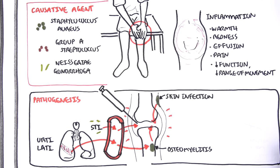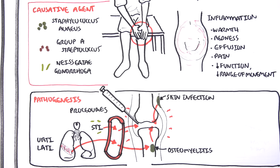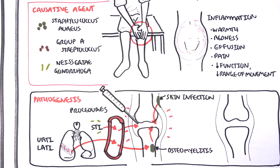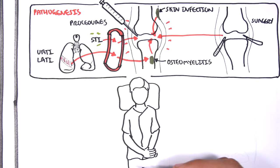Procedures such as injections to the joint space can introduce bacteria into the joint causing septic arthritis. It's also important to consider surgery as a cause — during surgery, bacteria may enter the joint from skin or from poor aseptic technique.